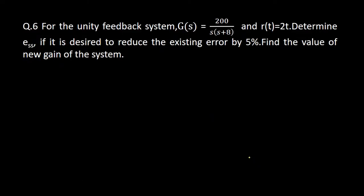Question number six on steady state error coefficients: for the unity feedback system, G(s) is equal to 200 divided by s(s+8), and R(t) is equal to 2t. Determine the steady state error E_SS. If it is desired to reduce the existing error by 5%, find the new gain of the system. So we have to determine the steady state error and then find the new gain value.